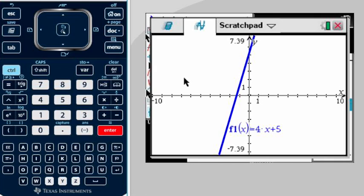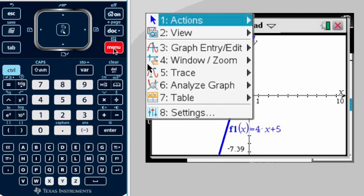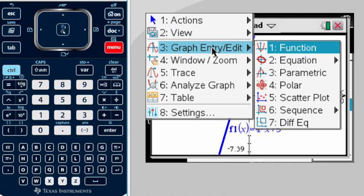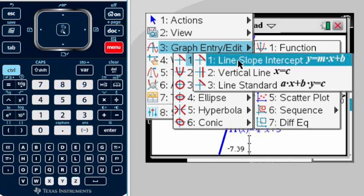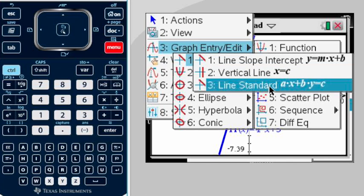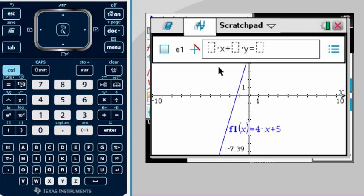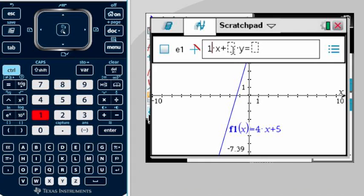I'm going to put my first equation in slope intercept form: f1(x) = 4x + 5. The second one I'm going to put in standard form. I have to go to Menu, Graph Entry, I have an Equation, it is a Line, but I have it in standard form. This is going to be x + y = 15, where I have to put the coefficient 1 for both x and y.